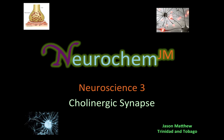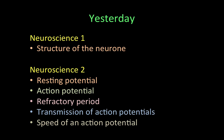Hi guys, Jason Matthew here again, and today we're going to be looking at Neuroscience 3, Cholinergic Synapse. We have already done Neuroscience 1 and Neuroscience 2. In Neuroscience 1, we looked at the structure of the neuron, and in Neuroscience 2, we looked at the resting potential, action potential, refractory period, transmission of action potentials, and the speed of an action potential.